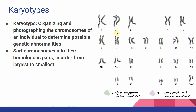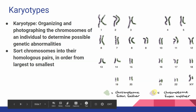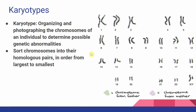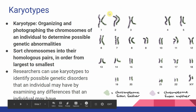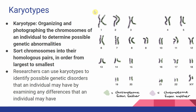Pair one is going to be our largest chromosome, slightly smaller for two, three, and all the way down the line getting smaller and smaller. This is a tool we can use to try to determine if someone may have a genetic abnormality. Researchers can use karyotypes to identify possible genetic disorders by examining any differences in an individual's karyotype. This is a typical looking karyotype — we have 23 pairs of chromosomes, two in each pair, and the chromosomes in each pair should be about the same size.